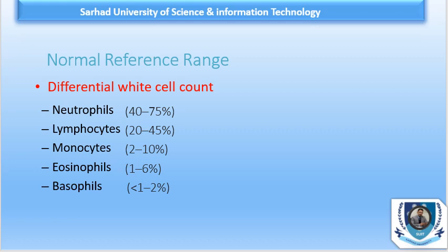The normal reference ranges for differential white blood cell count are: neutrophils 40 to 75%, lymphocytes 20 to 45%, monocytes 2 to 10%, eosinophils 1 to 6%, and basophils less than 1 to 2%. These are the normal percentages usually present on a peripheral smear.